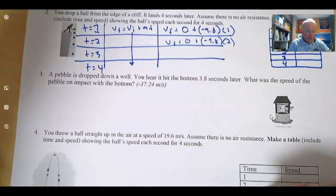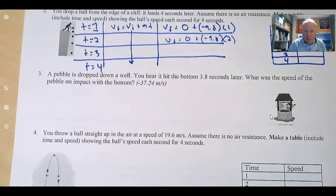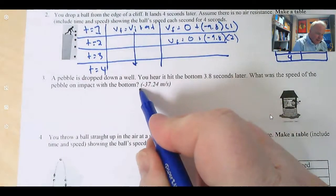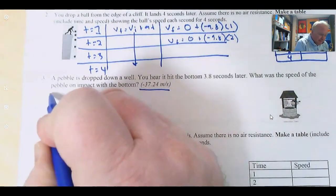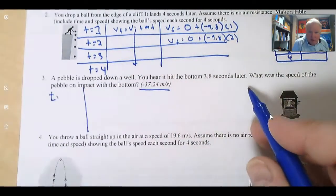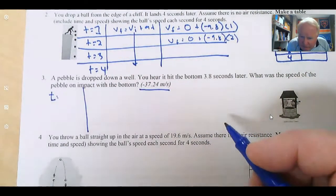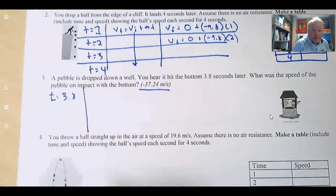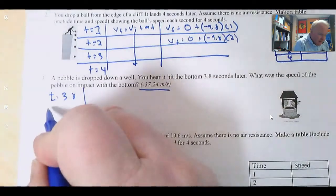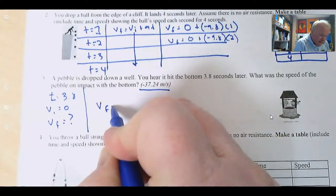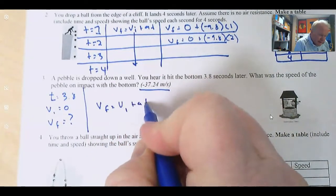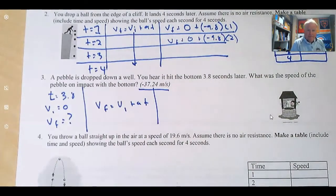The next question is question three. A pebble is dropped down a well. You hear it hit the bottom 3.8 seconds later. What was the speed of the pebble on impact? This is a four-column method problem. They say T is equal to 3.8. The ball is dropped, so VI is equal to zero. They're asking us to find VF. So it's just VF equals VI plus AT, and we substitute and we solve here.